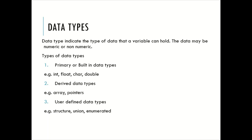The next topic is data types. A data type indicates the type of data that the variable can hold — the data may be numeric or non-numeric. Data type specifies what type of values a variable should hold. The data types are categorized into primary or built-in data types, derived data type, and user-defined data type. In this semester we are going to use the primary or built-in data types.